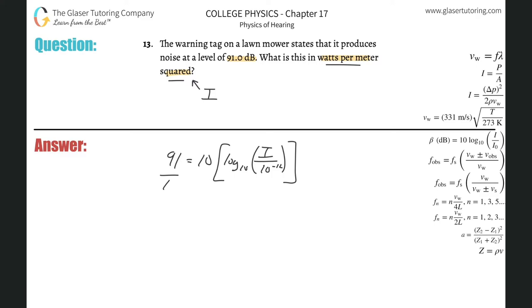All I need to do now is first divide out the 10 from the right hand side and divide it over to the left. We know we're going to arrive at an answer of 9.1. That's going to equal then log of base 10 times the intensity divided by 10 raised to the minus 12.